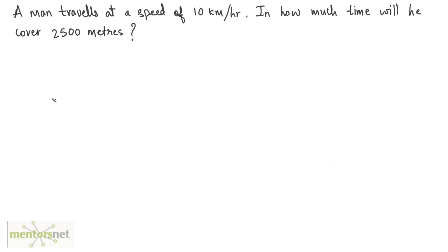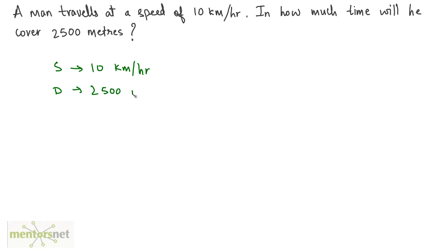A man travels at a speed of 10 kilometers per hour. In how much time will he cover 2500 meters? We are given the speed of 10 kilometers per hour, and the distance is 2500 meters.